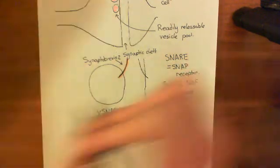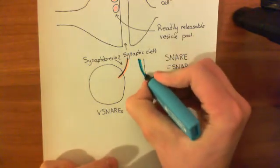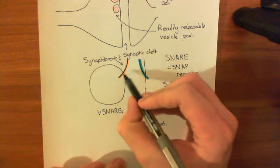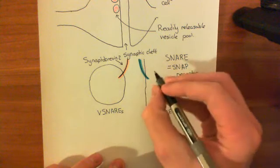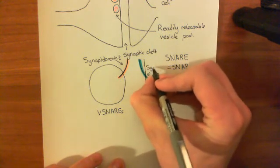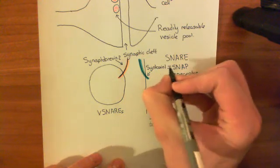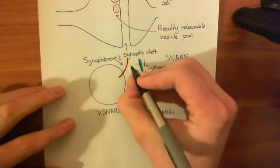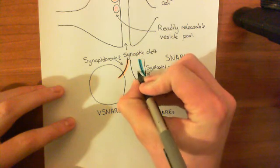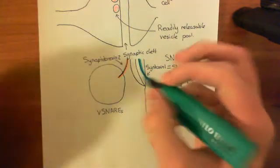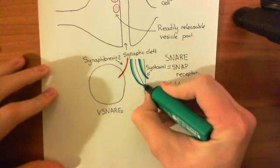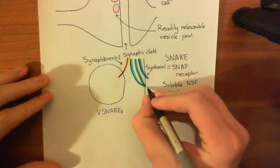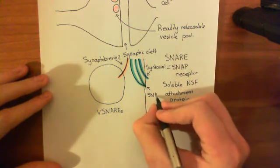The first T-SNARE is syntaxin-1. Syntaxin-1 and synaptobrevin-2 have very similar structures — they have a membrane attachment portion that spans the membrane, and then a cytoplasmic portion which is a long alpha helix. There are lots of different syntaxins, and the one specifically involved in docking synaptic vesicles to the plasma membrane is syntaxin-1. The other T-SNARE is SNAP25, which has a membrane attachment portion and two alpha helices going into the cytoplasm.